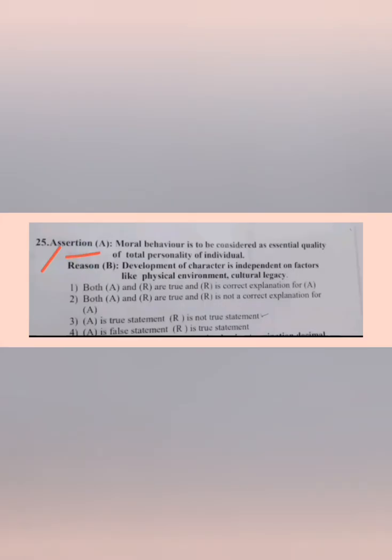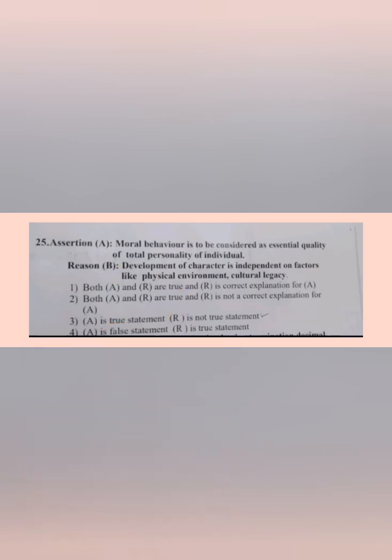This question is of assertion and reasoning type. There will be two statements and we have to find out whether the statements are true or false and how they are related. Note that in this paper they have used 'R' for reasoning but written 'A' and 'B' in the brackets — it seems like a mistake. Don't get confused by that.